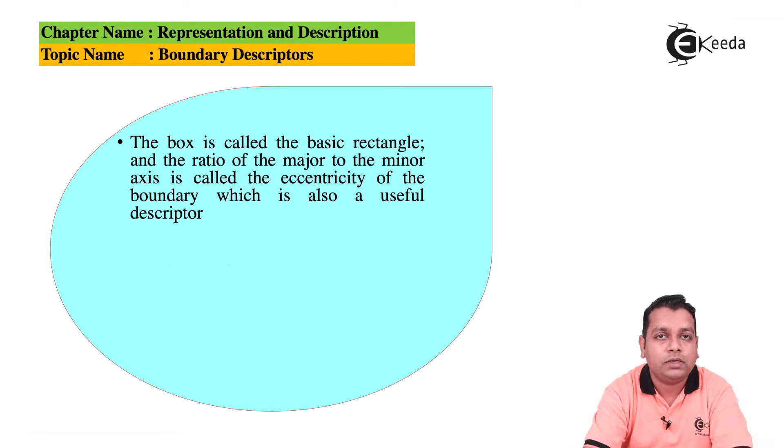Most possibly the major axis, the minor axis, the eccentricity, these terms you must have gone through while understanding the geometrical shape of an ellipse. So these are applicable to the boundaries here. These terms we carry forward.